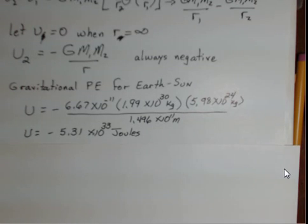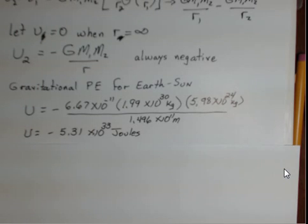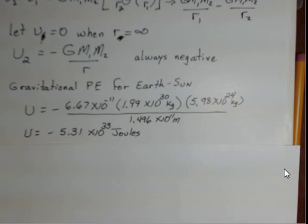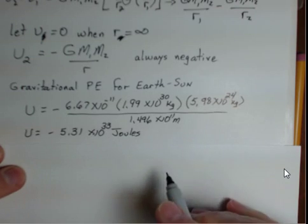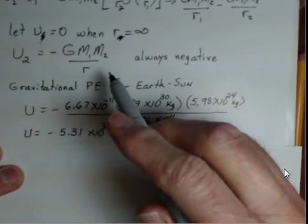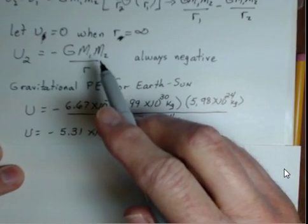That is our potential energy situation. If we somehow wanted to break free from the Sun, we'd have to bring our total energy up to zero. The total energy is kinetic plus potential — this is only the potential side. There's another video that adds kinetic and potential energy together. Importantly, MGH is not accurate when we're at great distances — this is the better, more accurate way to calculate gravitational potential energy.